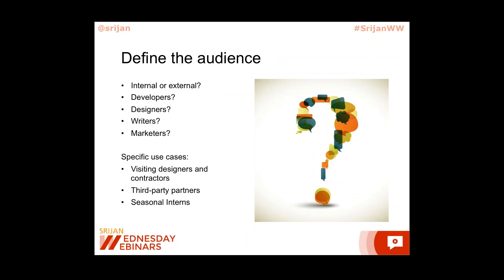We started by figuring out who the actual audience is for this pattern library. At first it was really meant for an internal audience of developers and wasn't put into place in a way that designers could understand. But there are also writers and marketers who regularly create content for our website and need to know where to go if they want something to look a specific way. Then there are more specific use cases for people outside our building — an outside vendor, a contractor, a summer intern — all of these different people come in and make things for our website or products. We need to be able to give them something that says: these are the guidelines with which you should work.